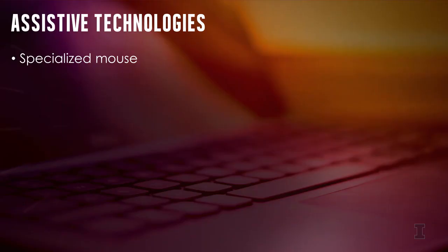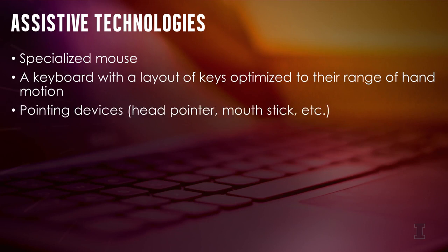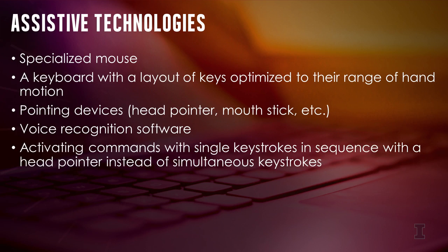When it comes to computer use, people with motor disabilities affecting the hands or arms aren't able to use a standard mouse. Instead, they might use a specialized mouse or keyboard with a layout of keys optimized to their range of hand motion, or a pointing device such as a head mouse, head pointer, or mouth stick, voice recognition software, or other assistive technologies customized to their abilities. When accessing electronic information, they may need to activate commands by typing single keystrokes in sequence rather than simultaneously, and there may also be more time needed when filling out interactive forms.